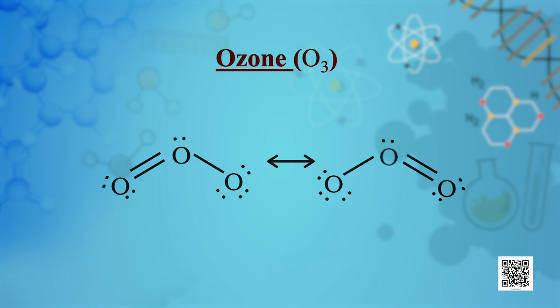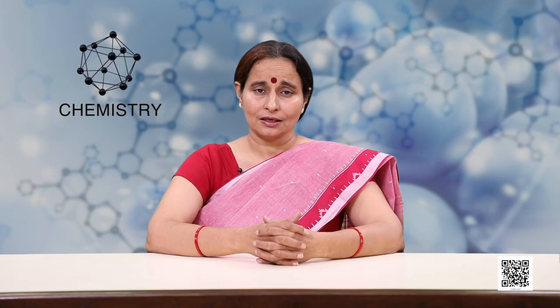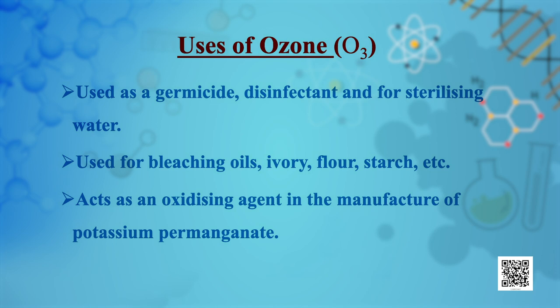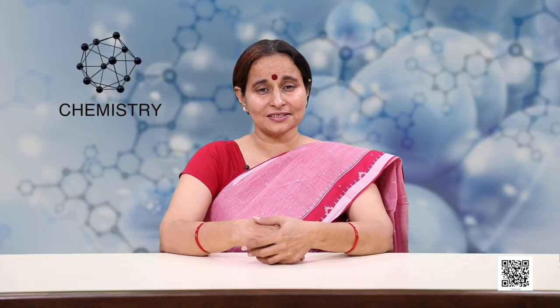The two oxygen–oxygen bond lengths in the ozone molecule are identical and the molecule is angular, with a bond angle of about 117°. Ozone is used as a germicide, disinfectant and for sterilizing water. It is also used for bleaching oils, ivory, flour and starch, and acts as an oxidizing agent in the manufacture of potassium permanganate.